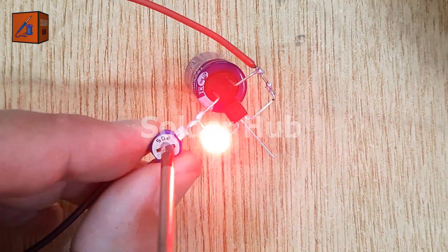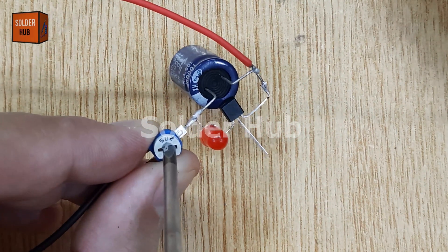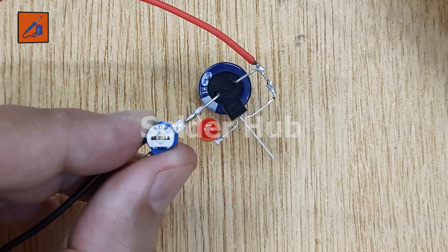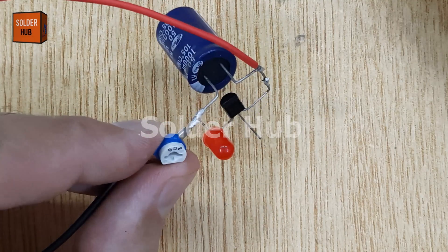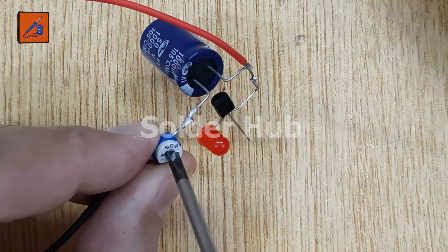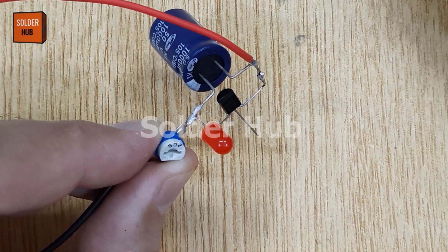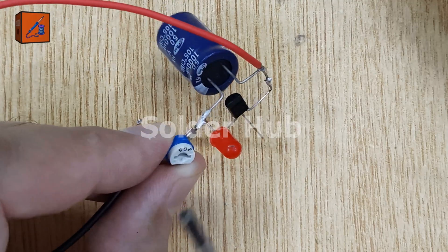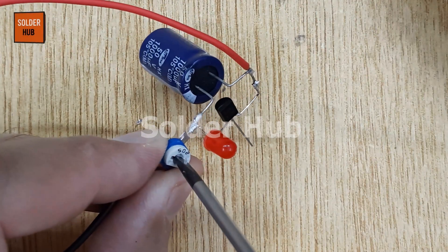This project is a simple and fun way to learn about timing circuits, capacitor charging, and basic transistor switching. It's ideal for beginners and great for experimenting with strobe lighting or visual signaling effects using just a few low-cost components. If you found this project helpful or interesting, please give it a like, subscribe to the channel, and let me know your thoughts in the comments below. Thanks for watching.